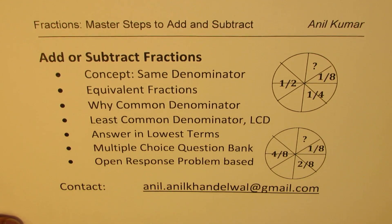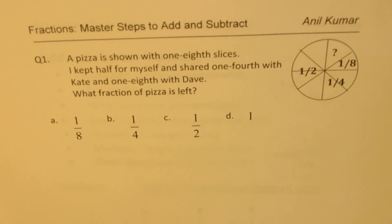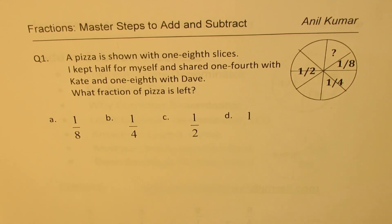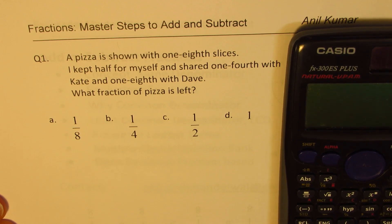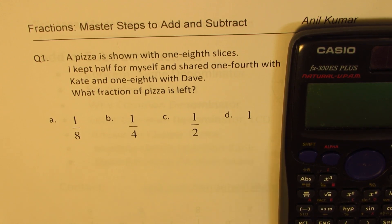Let me pull out my first example. Here is a scary-looking problem: a pizza is shown with one-eighth slices. I kept half for myself, shared one-fourth with Kate, and one-eighth with Dave. What fraction of pizza is left? Now, this is not so difficult. I have a diagram here — imagine the diagram is not there and we are just reading the question.